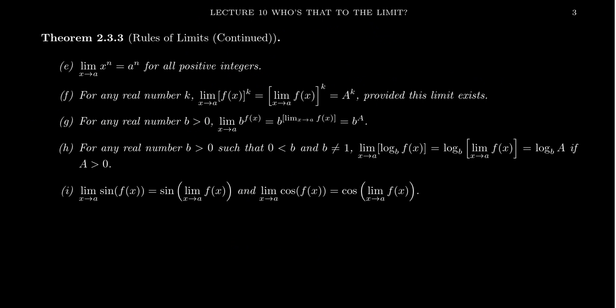Property E tells us that the limit as x approaches a of x to the n is going to approach a to the n for all positive integers n. For any monomial, the limit as x approaches a of x^n is just a^n — it's simply function evaluation. To calculate the limit of a monomial, you just have to evaluate the monomial at the number inside its domain. I want to point out that by property E combined with the linearity properties A and B, this actually implies we can compute the limit of any polynomial function just by evaluating the polynomial.